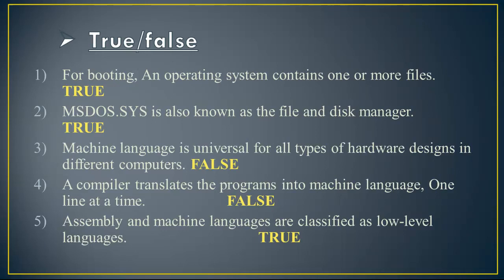Fourth one: a compiler translates the program into machine language one line at a time. That is false. Fifth one: assembly and machine language are classified as low level languages. That is true.